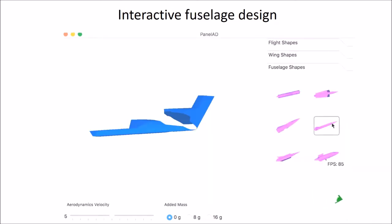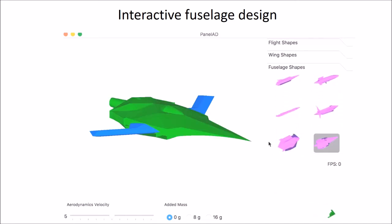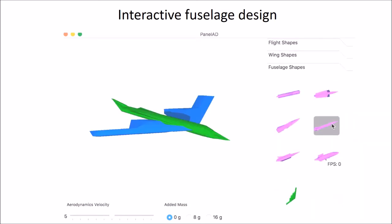Similar to the wing shape design, the user can select and edit different fuselage shapes. The user can also receive the feedback from the simulation window to achieve a good design.